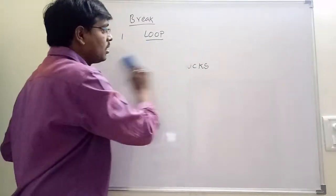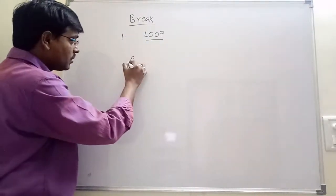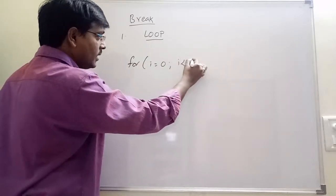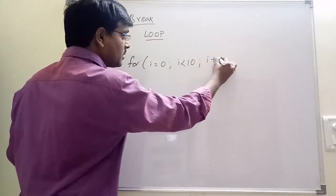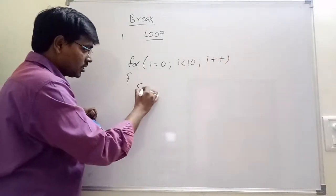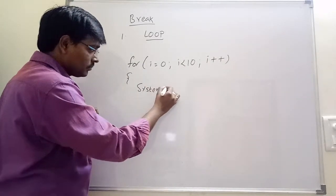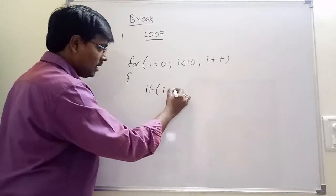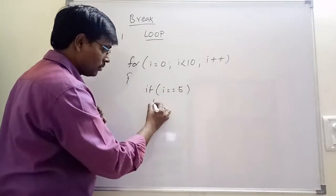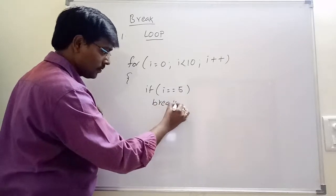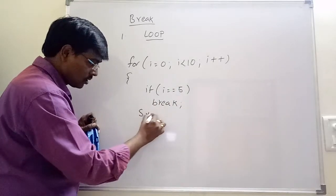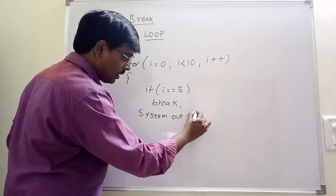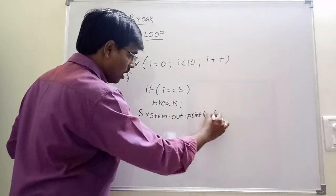Now first let's check how to come out of a loop. For example: for i = 0, i less than 10, i plus plus — if i equals equals 5, break. Then System.out.println of i.